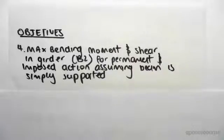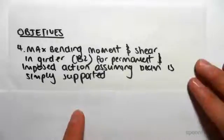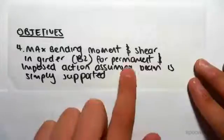Hey guys, the objective for this video and the next video are going to be to find the maximum bending moment and shear in girder 2 for permanent and imposed action assuming beam is simply supported. In this video I'm just going to be covering the maximum moment and shear for the permanent action.